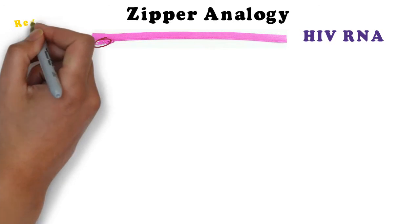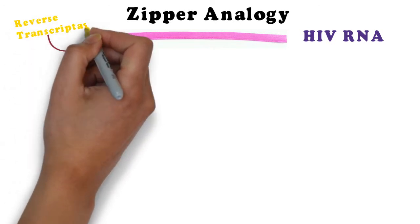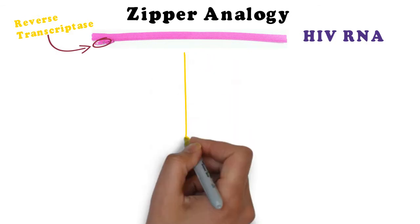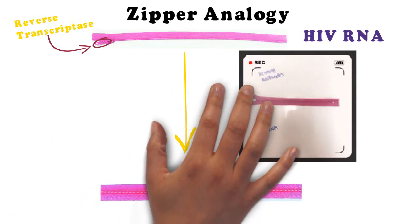Now we will demonstrate the mechanism using a zipper analogy. In this analogy, the zipper itself is like the single-stranded RNA, and the reverse transcriptase enzyme is like the zipper pull-tap. And as you pull along the single-stranded RNA, it's essentially like adding nucleotides, forming the double strand.